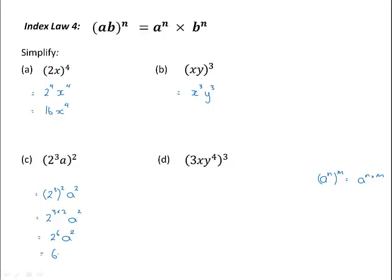And 2 to the power of 6 is 64. For this last expression, the power of 3 outside the bracket means that we have 3 to the power of 3, x to the power of 3, and y to the power of 4 raised to the power of 3 again. 3 cubed is 27, x cubed, and y to the 4 times 3 is y to the 12. So in simplest form, this is 27x cubed, y to the power of 12.